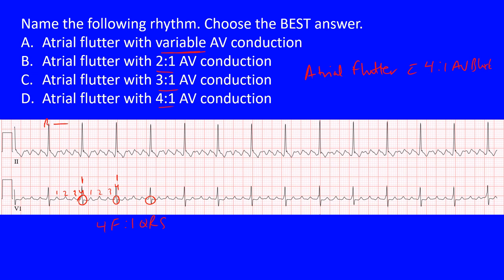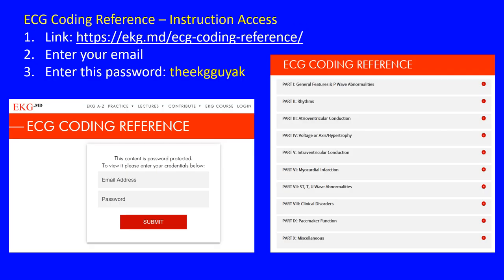This is atrial flutter with a 4:1 AV block, meaning one QRS complex for every four flutter waves. It's not variable AV block because all the R-to-R intervals are equal — this is a regular rhythm. If the rhythm were irregular we'd need to differentiate atrial flutter from atrial fibrillation, but management isn't very different. The correct answer is D — 4:1 AV block.